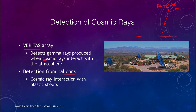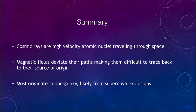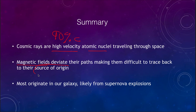They're also hard to detect directly because of their location and because they do not make it down through the Earth's atmosphere. To summarize what we talked about with cosmic rays: they are very high velocity atomic nuclei — about 90% of the speed of light — that travel through space. They are difficult to track because magnetic fields cause their paths to deviate, making them difficult to trace back to their source of origin. But we do believe that most of them originate within our galaxy, probably from supernova explosions. That concludes this lecture on cosmic rays. We'll be back again next time for another topic in astronomy.